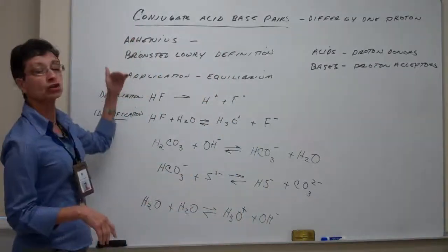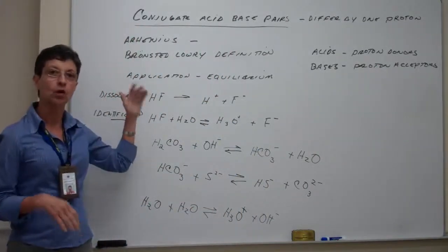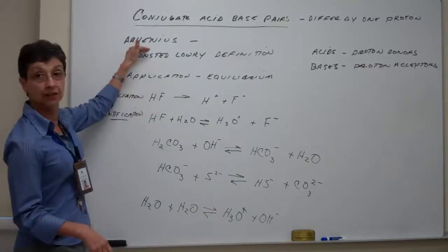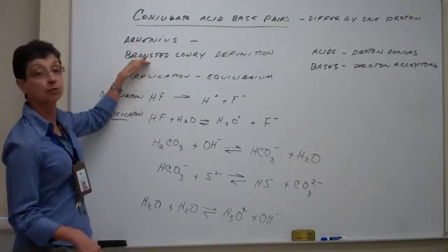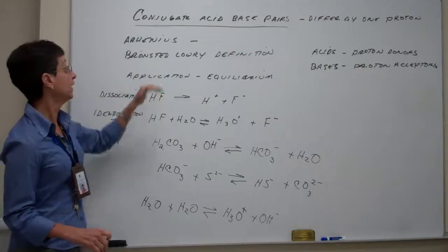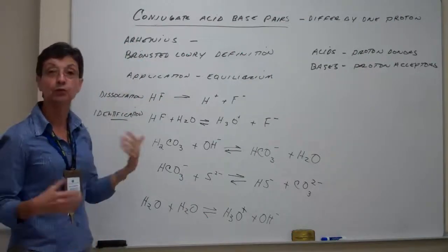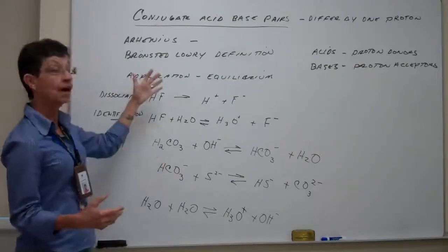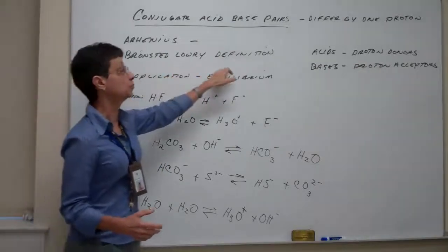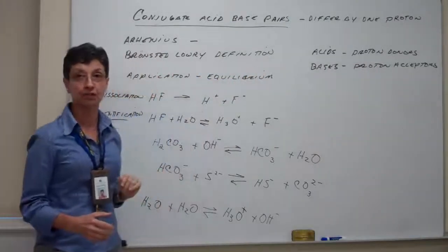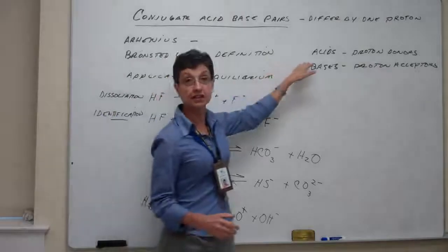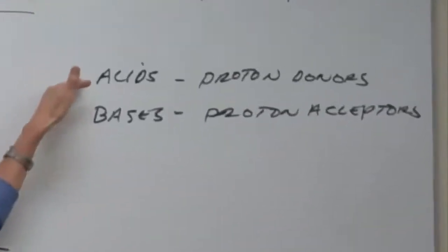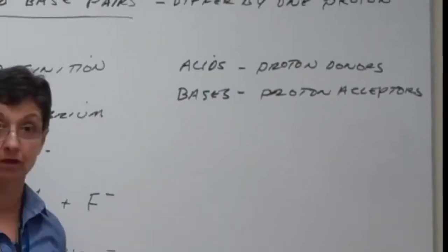Alright, so there are two definitions that we know acids by: Arrhenius definitions and the Bronsted-Lowry definition. We have already discussed very briefly both of these when we introduced acids. But now, we are going to focus on the Bronsted-Lowry definition. And here's the definition, very simple. Acids are proton donors.